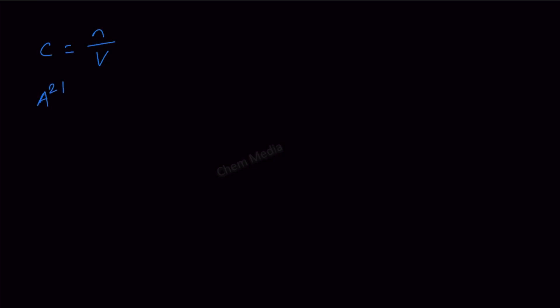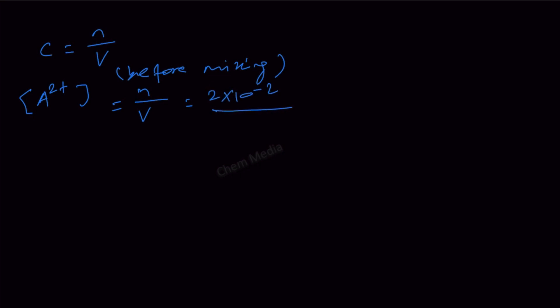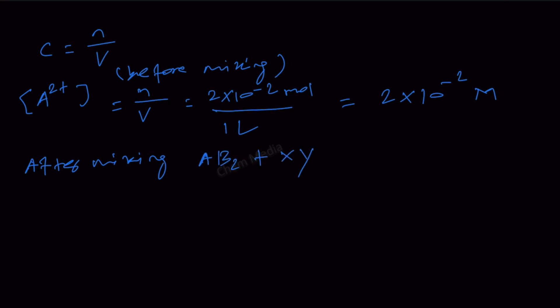If we measure [A²⁺] before mixing, we can write it as number of moles divided by volume — say 2 × 10⁻² moles divided by 1 liter, giving 2 × 10⁻² M. But after mixing AB₂ and XY, we cannot consider the volume as 1 liter anymore, because each solution contributes 1 liter, making the total volume 2 liters. Therefore everywhere we have to divide by 2.